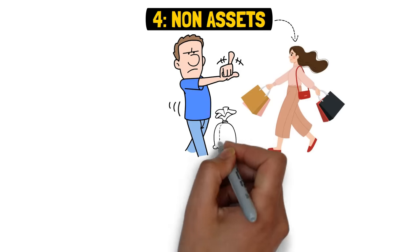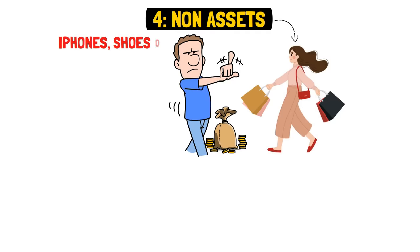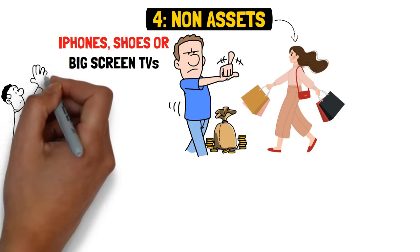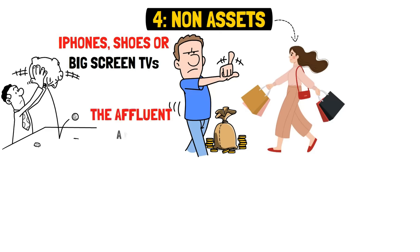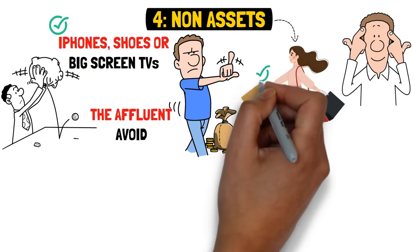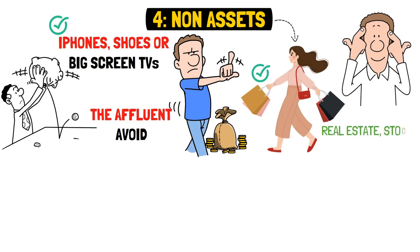Four, non-assets. These items represent sneaky money drains. They don't generate income or increase in value. Think of new iPhones, shoes, or big screen TVs. These financial sinkholes are silent wealth killers, slowly and steadily draining resources. The affluent avoid falling for these traps. They understand the difference between these non-assets and actual investments like real estate, stocks, or businesses. Their buying choices focus on accumulating value, which is fundamental to their strategy for building enduring wealth.